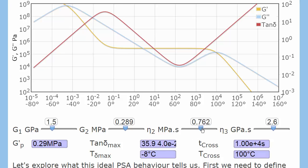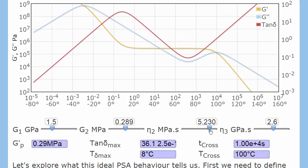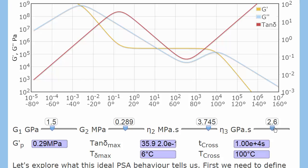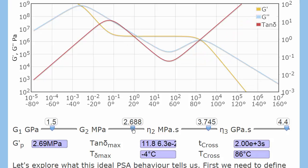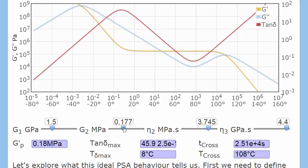So, if you want a higher temperature performance, you need to increase eta 2, and you need to increase eta 3. If you've got too high a plateau modulus, then you won't have Dahlquist, so you have to decrease it.